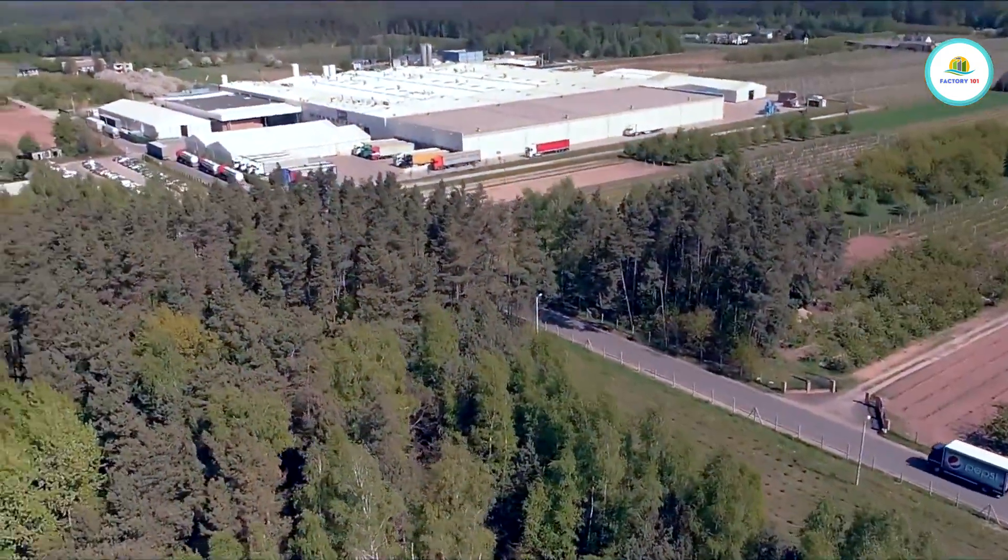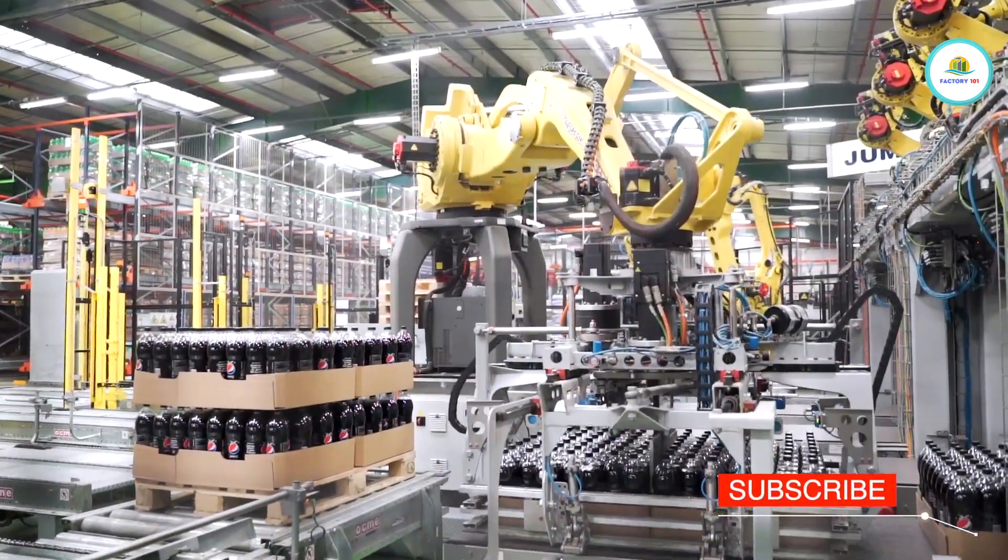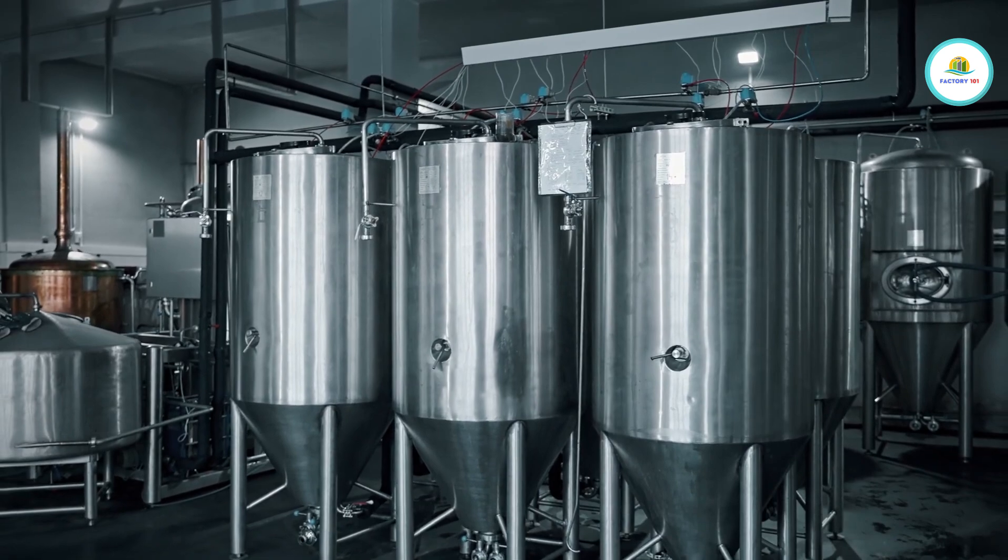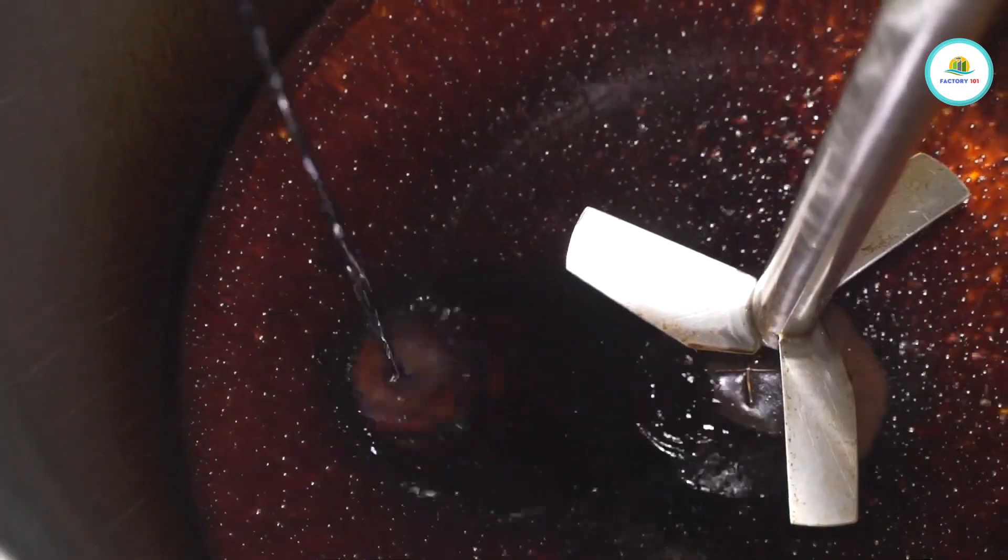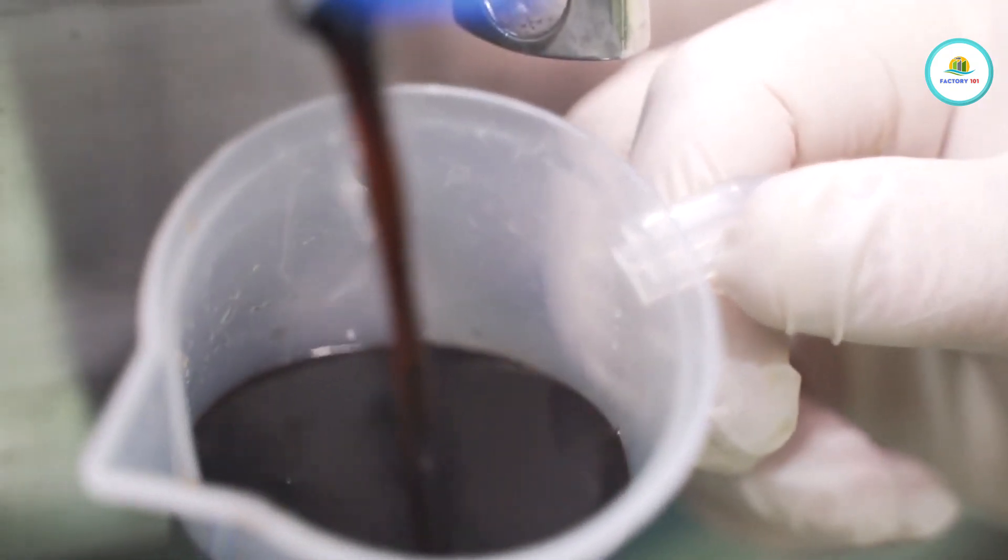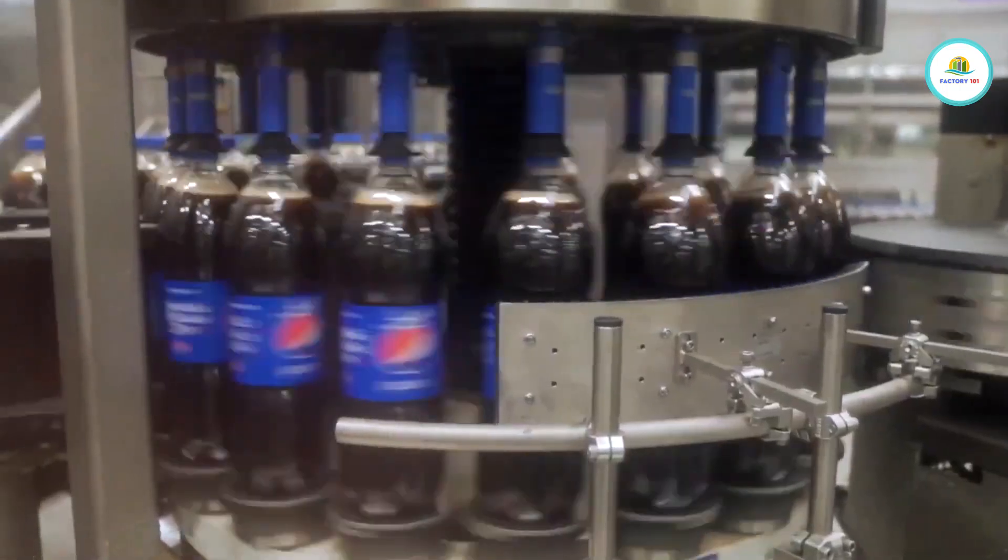Now let's step inside the bottling plant, a place where science fiction becomes reality. Giant stainless steel blending tanks carefully mix the purified water with the secret syrup and carbon dioxide. The mixture is chilled to near freezing temperatures, around 0 to 4 degrees Celsius, which helps the CO2 dissolve better, giving Pepsi its iconic fizz. And this is no slow drip process. Modern Pepsi factories can produce up to 1,200 bottles per minute. That's 72,000 bottles an hour.